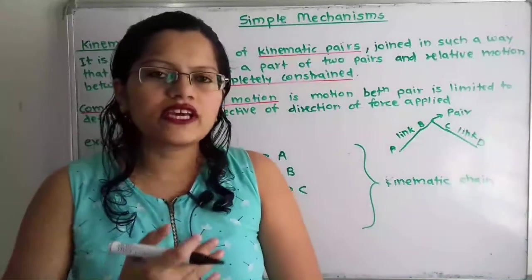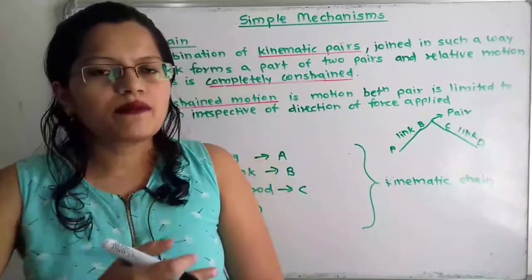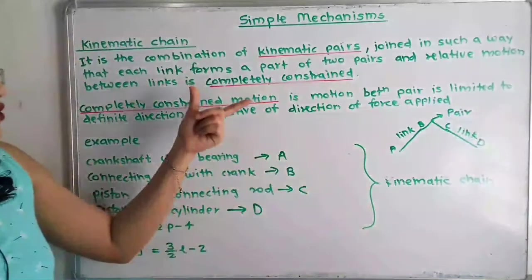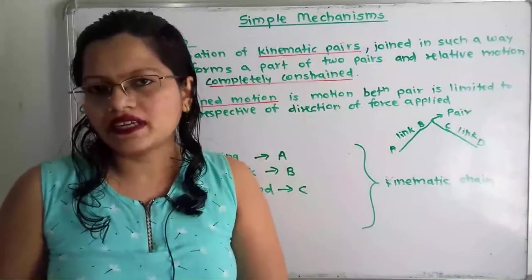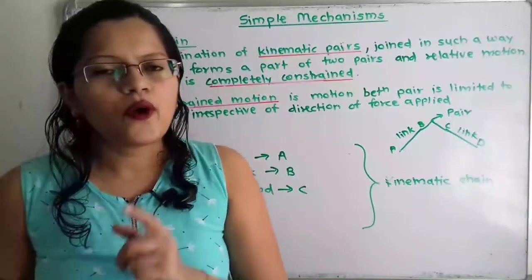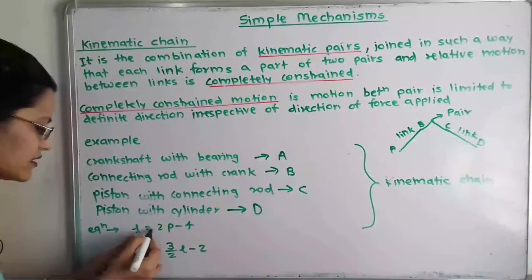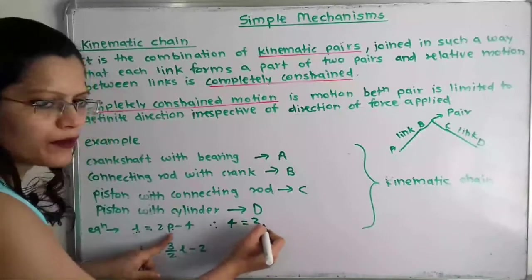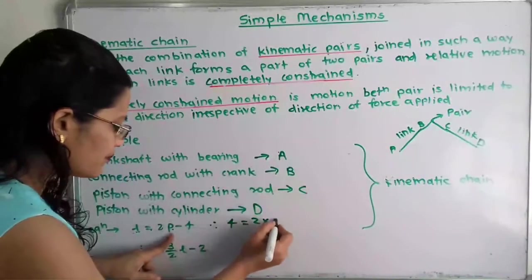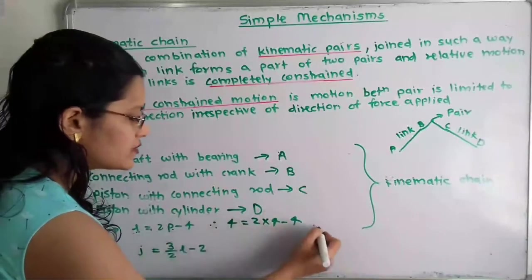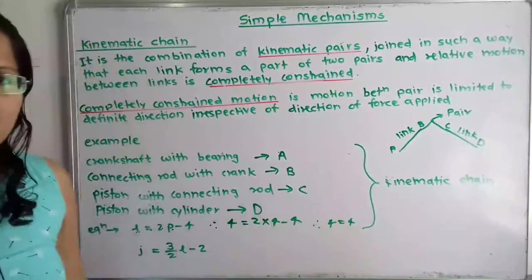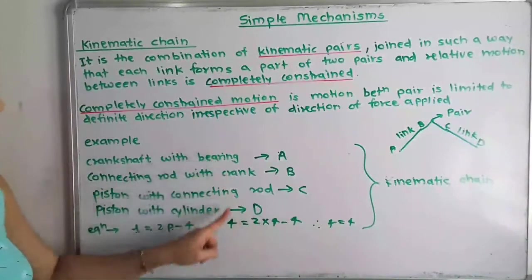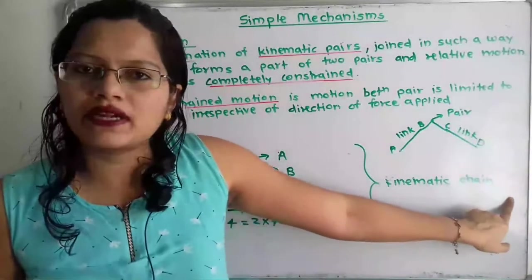There is also an equation relating the number of links and number of pairs. If this equation is satisfied, we can say that the combination of kinematic pairs is a kinematic chain. The equation is: l = 2p - 4. Here, number of links = 4, which equals 2 × 4 − 4 = 4. Since left-hand side equals right-hand side, all the pairs in this diagram are kinematic pairs and their combination is a kinematic chain.